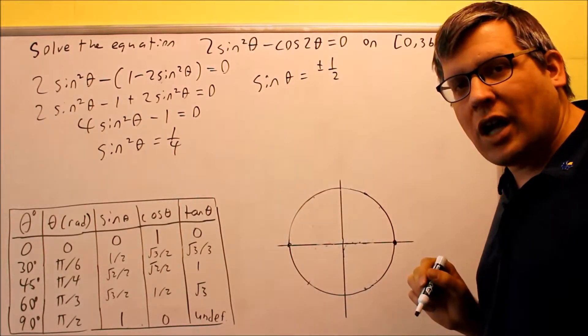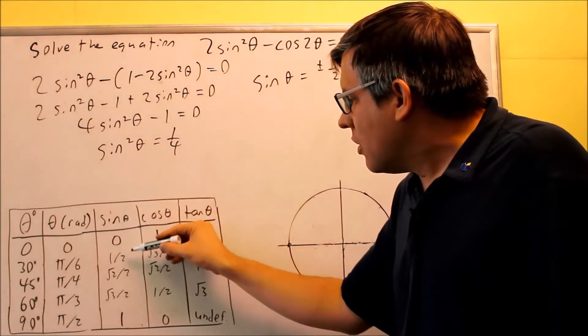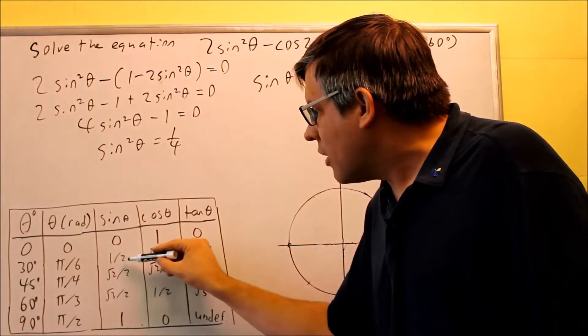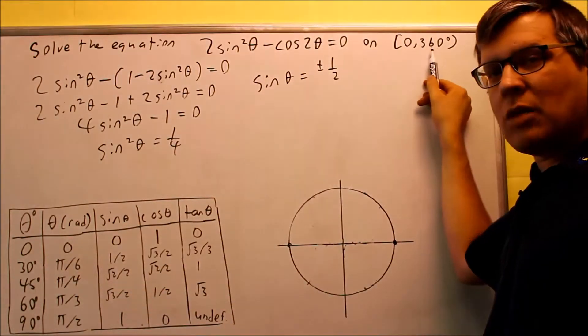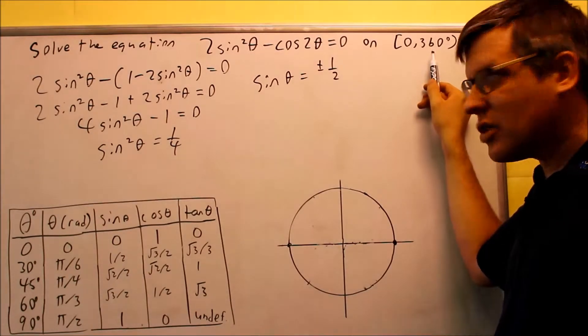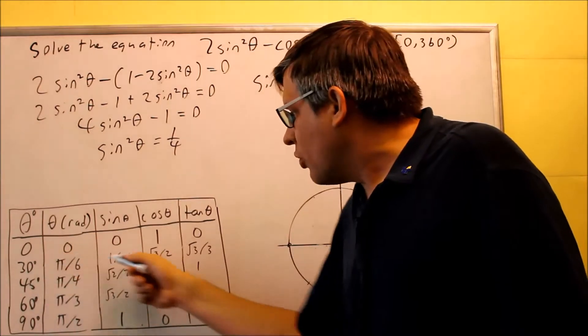If we look at the value for sine here, we look for one-half and one-half is right there. That refers to an angle of 30 degrees. We're okay to use degrees this time because our interval is from zero to 360. One-half is there, we get 30 degrees.